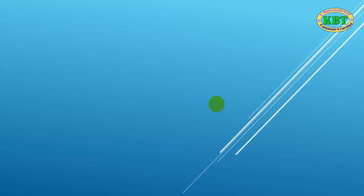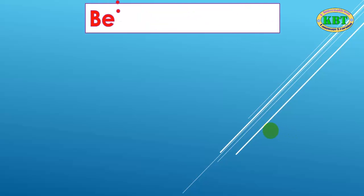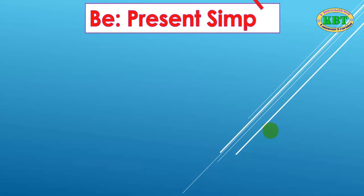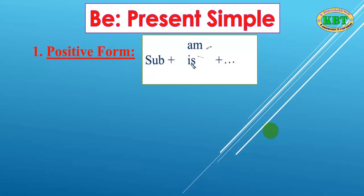Okay, hi everyone. Today I'm going to teach you about 'to be' in present simple — how we can say the present simple of 'to be'. Okay, let's see all together. In present simple, 'to be' has three forms: am, is, are. The subject we have seven subjects.